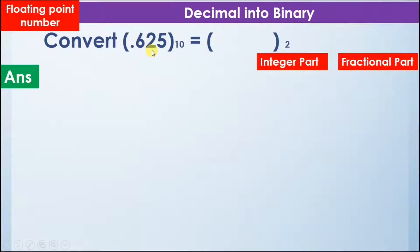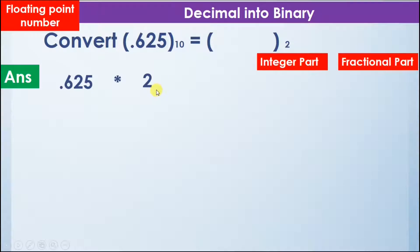We are given the number 0.625 in decimal and we have to convert it into binary. We will take the number 0.625 and multiply it by 2 — why 2? Because we have to convert it into binary and binary has the base 2. So we multiply the number by 2 and we get the answer 1.25.